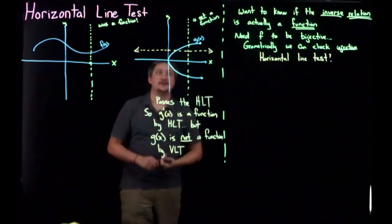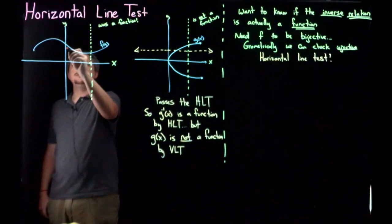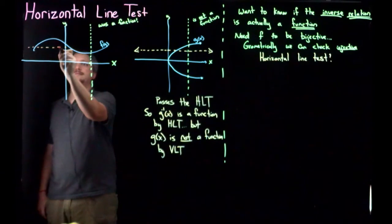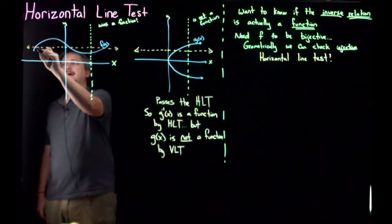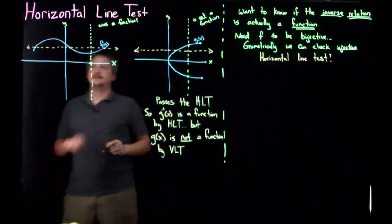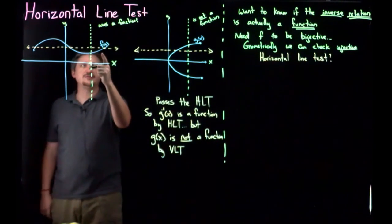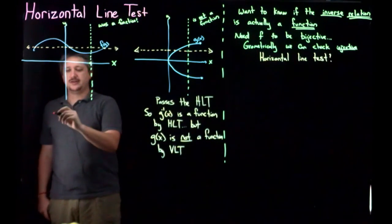Similarly, if I fix some output and look at all of the inputs, I actually hit this thing three different places. So here, it fails the horizontal line test, but passes the vertical line test.